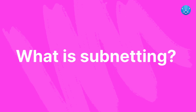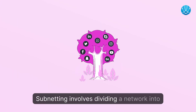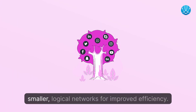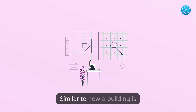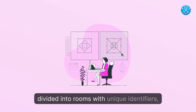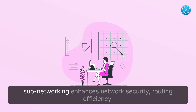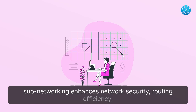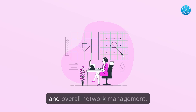What is subnetting? Subnetting involves dividing a network into smaller, logical networks for improved efficiency. Similar to how a building is divided into rooms with unique identifiers, subnetworking enhances network security, routing efficiency, and overall network management.